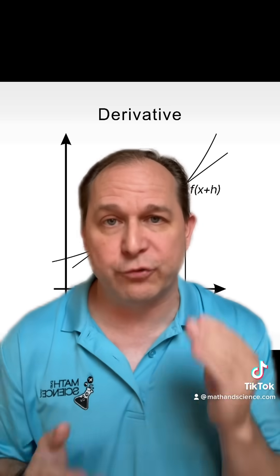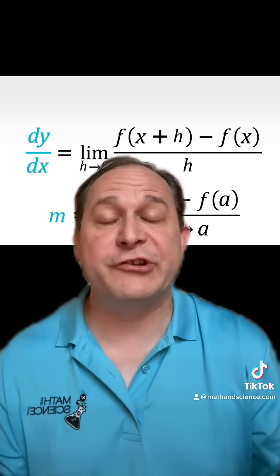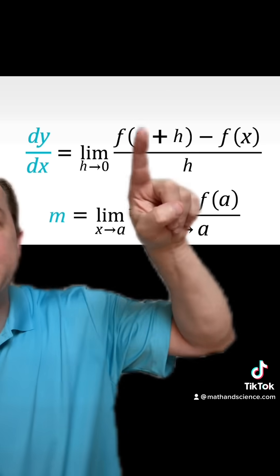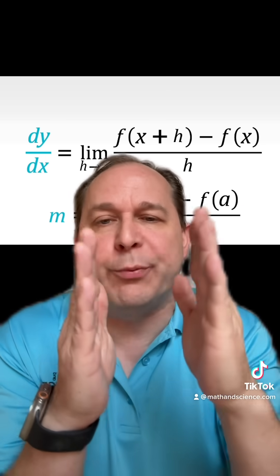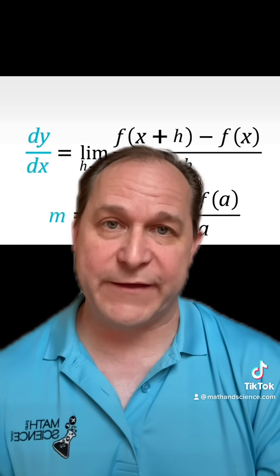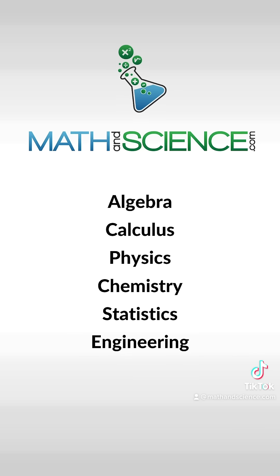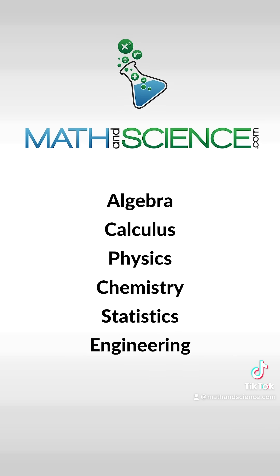That is what we call the derivative. So the definition of the derivative in calculus is the rise over the run, and the limit is taking those two points closer and closer together. And that's how we analyze things that are changing. Learn anything at mathandscience.com.